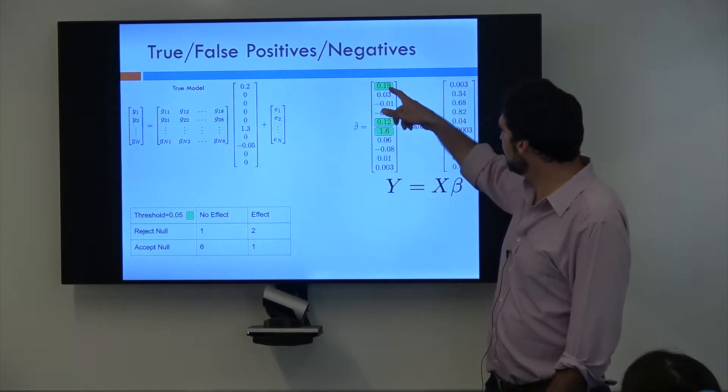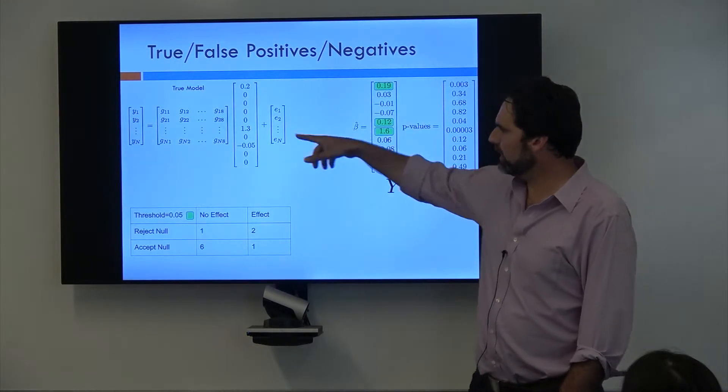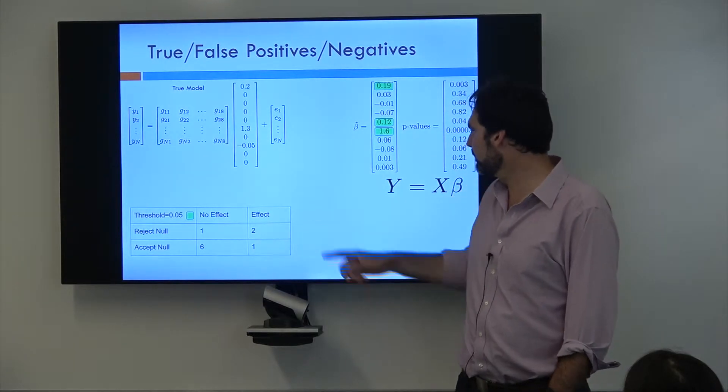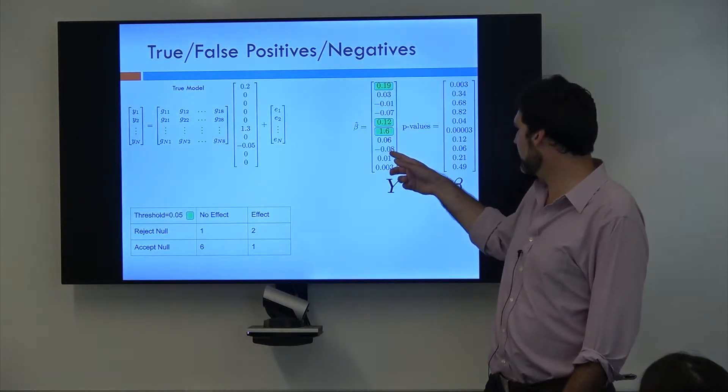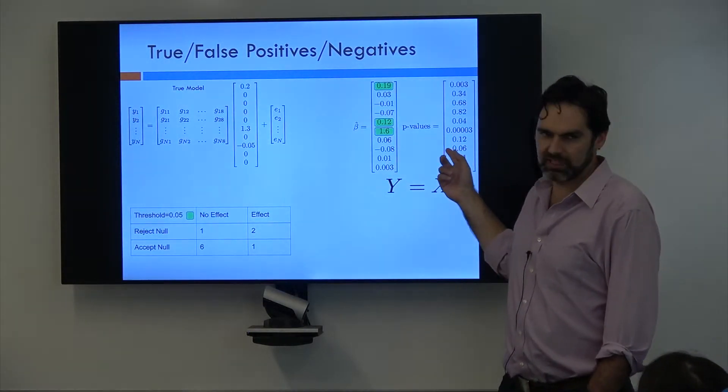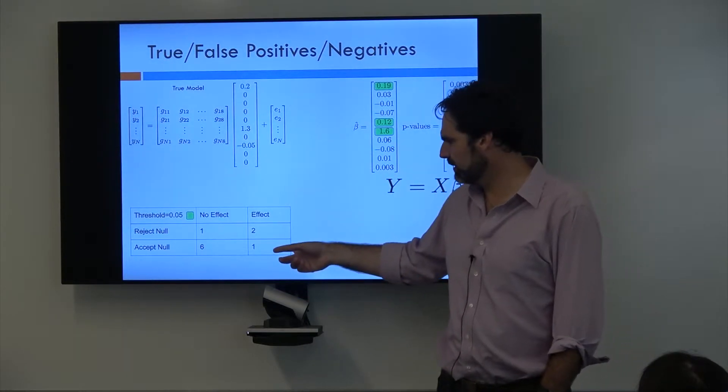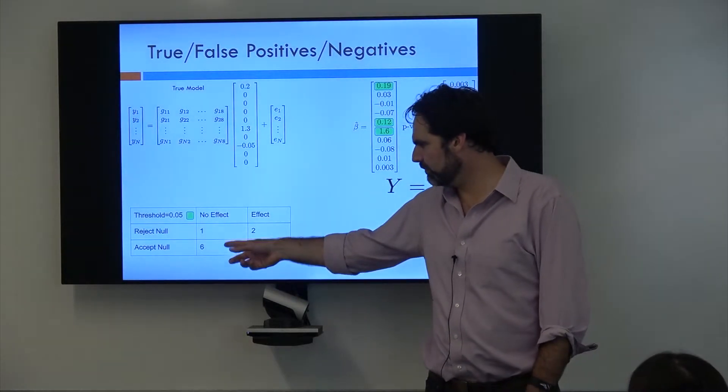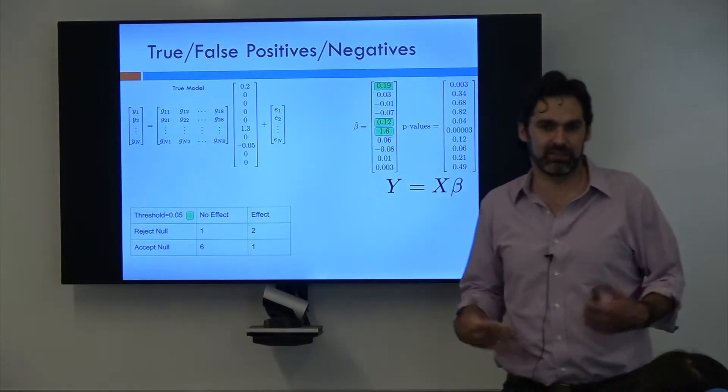Whereas for this guy and this guy, these both do have true effects. So we rejected the null, and there was actually effect. And one of them, this guy right here, due to random chance wasn't actually significant. So for this guy, true effect, but we accepted the null because we didn't have enough evidence. And for the rest of them, there was no effect and we accepted the null, which is fantastic.